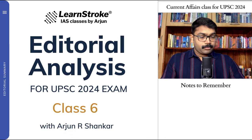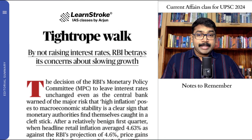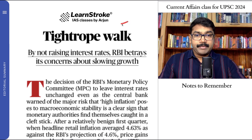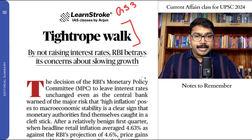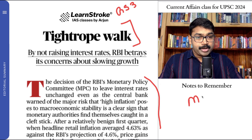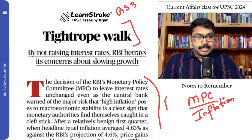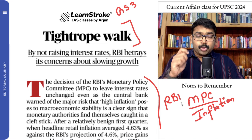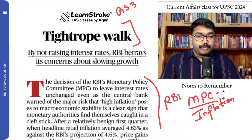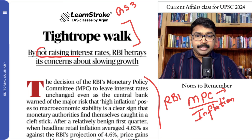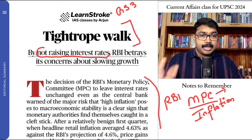The first important thing we have to discuss is a 'tightrope walk.' This comes under GS Paper 3, Economy. The article talks about three important concepts: what is the Monetary Policy Committee, what is inflation, and what is RBI going to do regarding interest rates. By not raising interest rates, what is RBI going to do in this regard is something we have to know here.